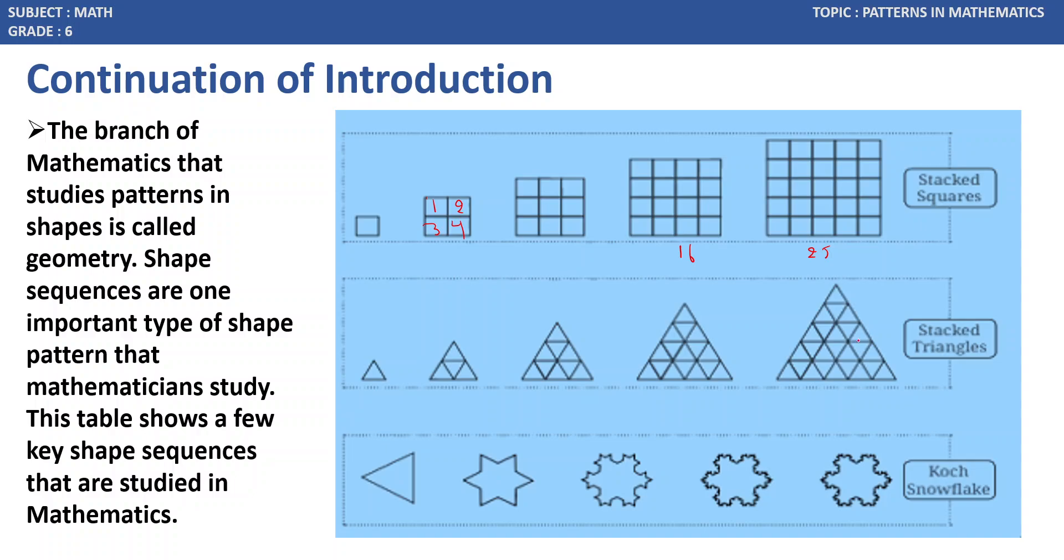Similarly, stacked triangles also, same as a square and subject, but the shape is in the form of triangle. But the number of triangles is equal to this. Here, 4, here 9. Similarly, 16 and 25.